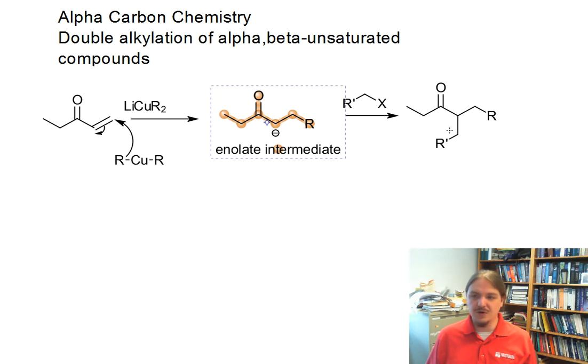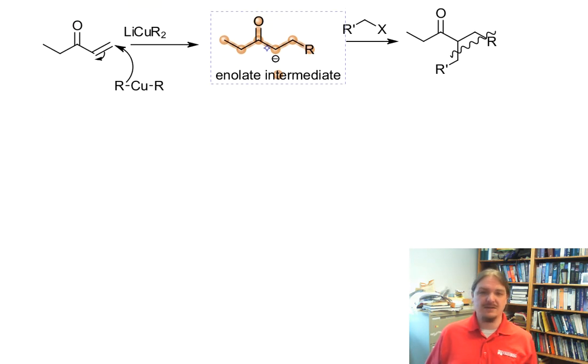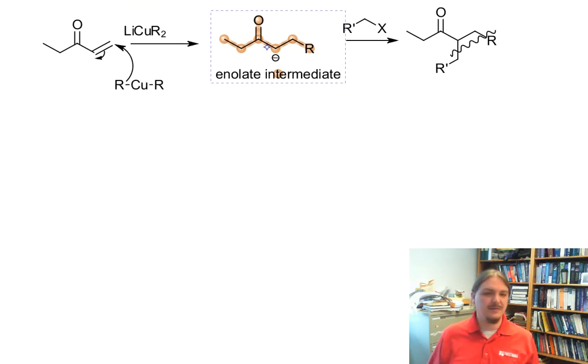We can get double alkylation where we end up putting two R groups onto the same molecule through what would probably happen in one reaction vessel, and we can't isolate this intermediate.